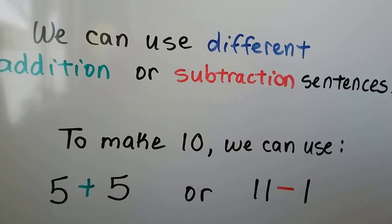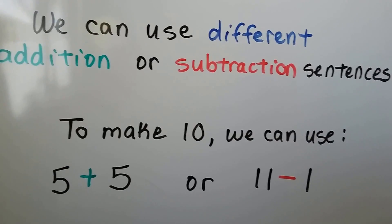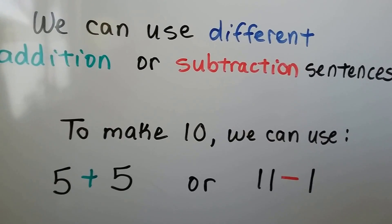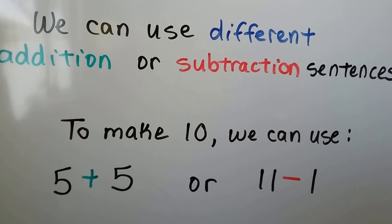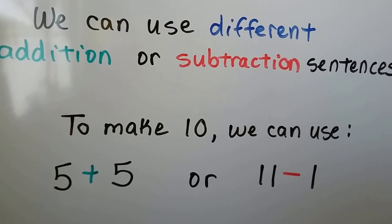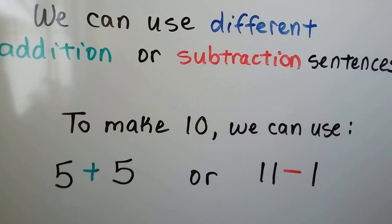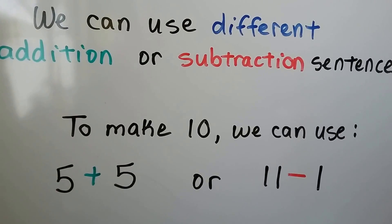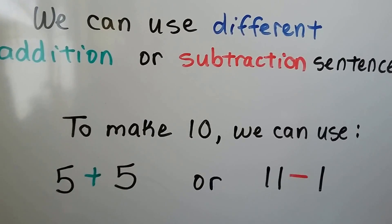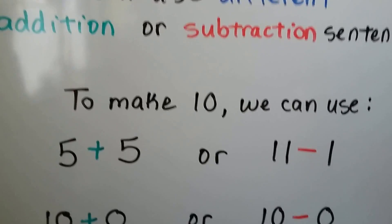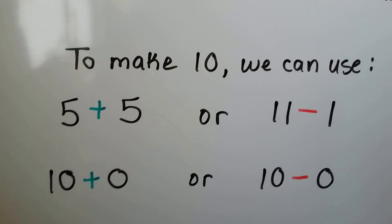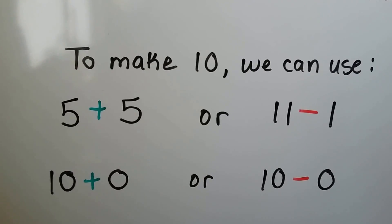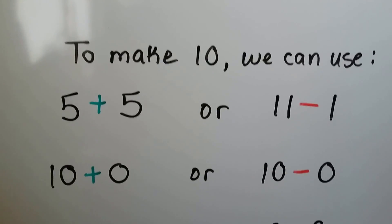To make 10, we could use the addition sentence 5 plus 5. We could use the subtraction sentence 11 minus 1. They both equal 10. We could also use 10 plus 0 or 10 minus 0 — that would still be 10.